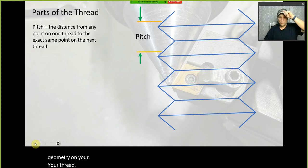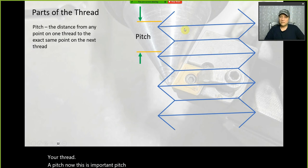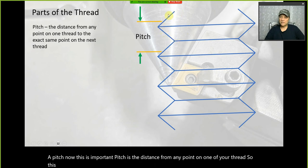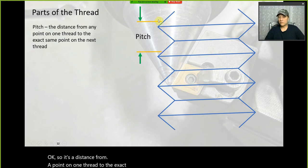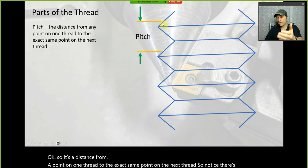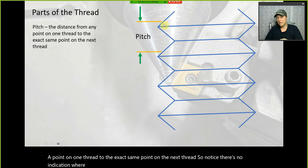Pitch is the distance from any point on one of your threads to the exact same point on the next thread. There's no specific indication of exactly where this point is — you can pick any point on a thread.